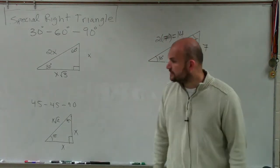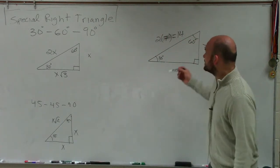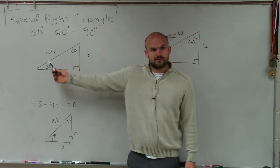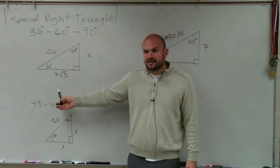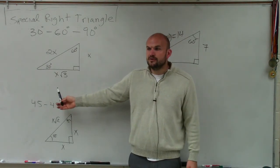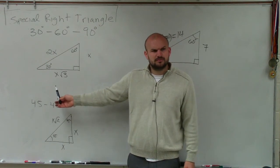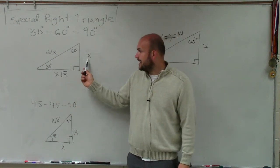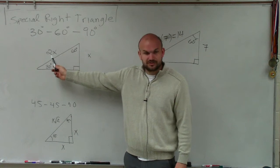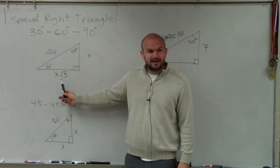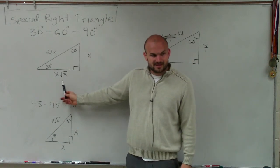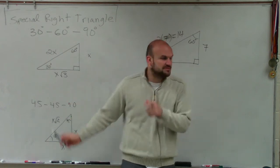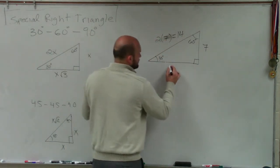Now the next thing is: here's my x. To get the hypotenuse, I multiply by 2. To get to my other leg, I need to multiply x by the square root of 3. So we have x, 2x, and x times the square root of 3. All I need to do is just multiply it by the square root of 3.